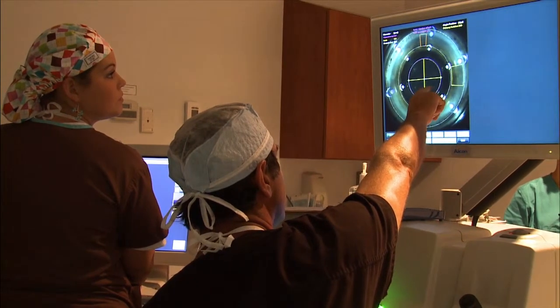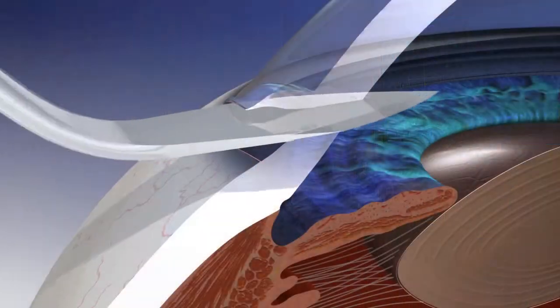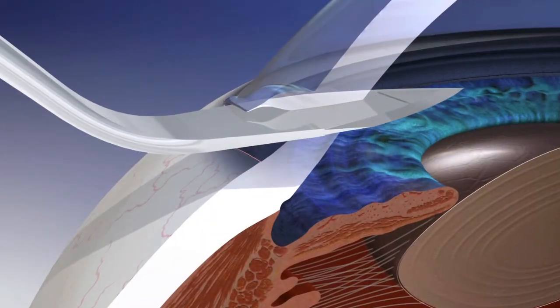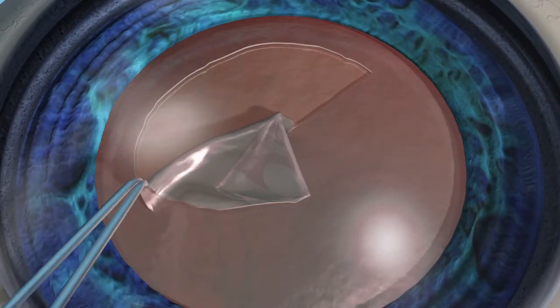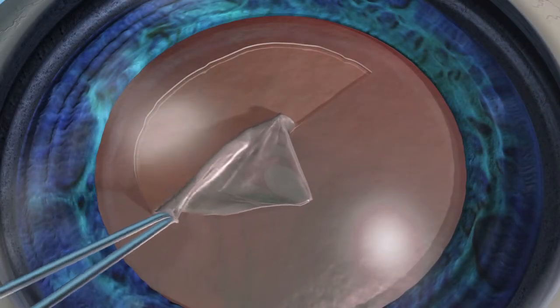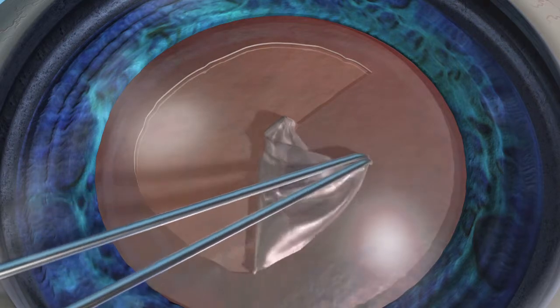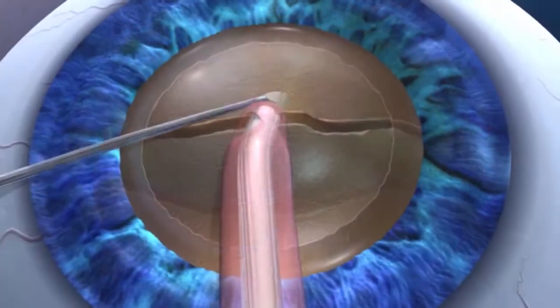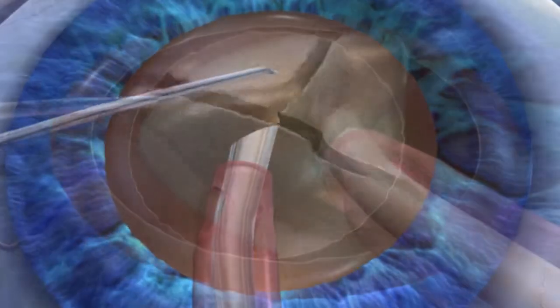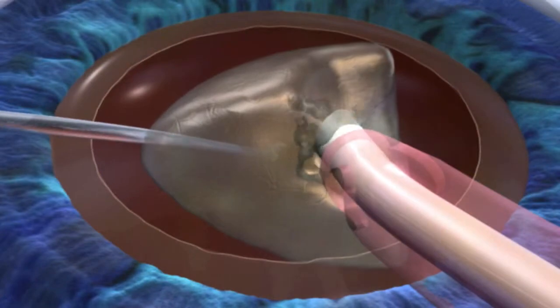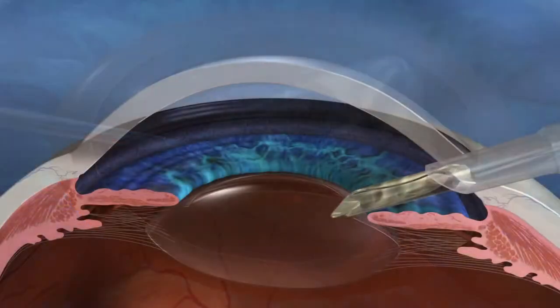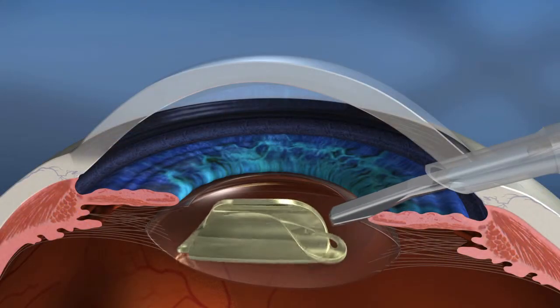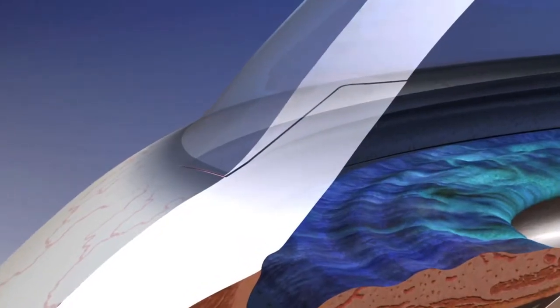Cataract surgery involves corneal incisions, capsular excess, a circular hole in the capsular bag, lens fragmentation, phacoemulsification, intraocular lens insertion, and incision closure.